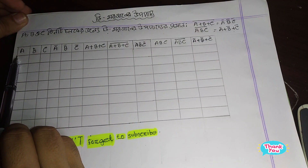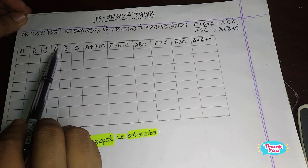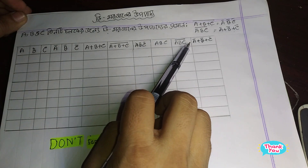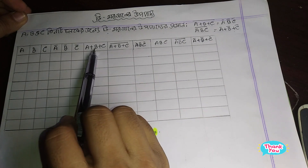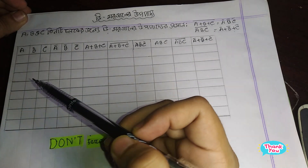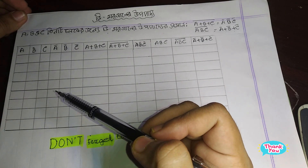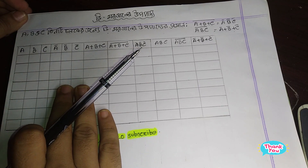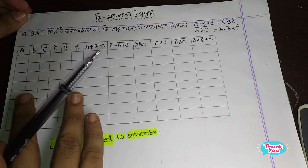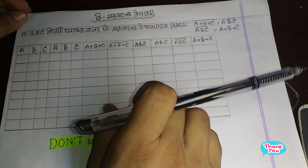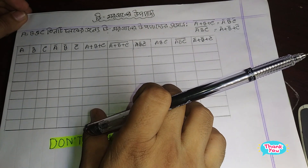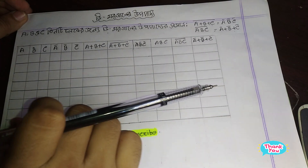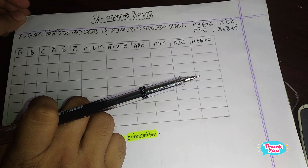We are learning a 100 system and we will keep a number of different values. The number of different values is very important: 1, 2, 3, and 4.